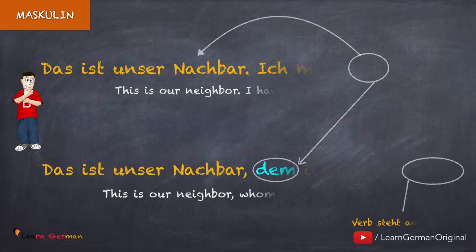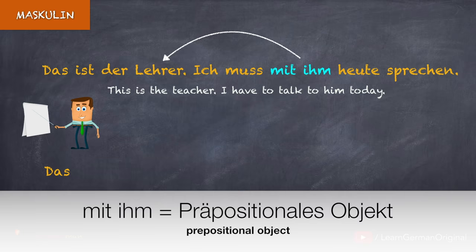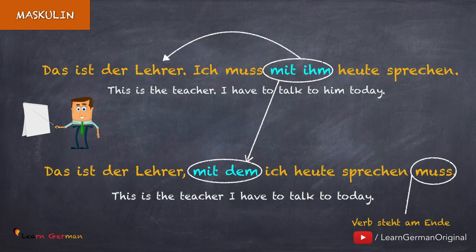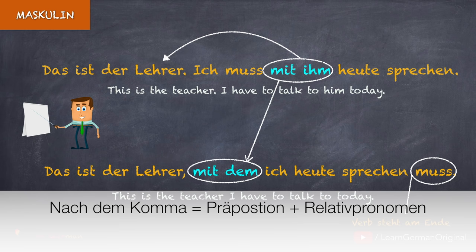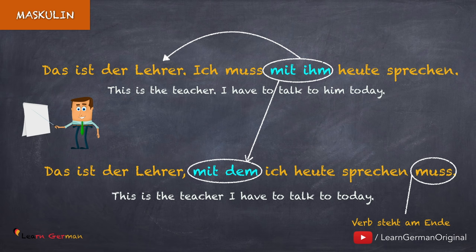Wir schauen uns jetzt auch ein Beispiel mit einer Dativ Präposition an. Das ist der Lehrer. Ich muss mit ihm heute sprechen. In dem zweiten Satz gibt es ein Präpositionales Objekt — mit ihm. Die Präposition hier ist Dativ. Wenn wir einen Relativsatz bilden, nehmen wir die Präposition mit: Das ist der Lehrer, mit dem ich heute sprechen muss. Nach dem Komma steht die Präposition mit dem Dativ Relativpronomen dem. Das Verb steht wie immer am Ende. Das gilt für alle Dativ Präpositionen. Über Dativ Präpositionen gibt es auch ein Video — Link findest du unten.